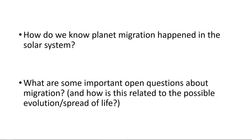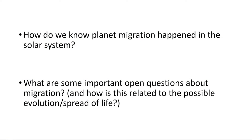I'm going to focus on two main questions here, because I don't have a ton of time. First, how do we actually know planet migration happened in our solar system? I think it's important to understand the context of that. And then, what are some of the most exciting open questions about this process, both in our solar system, and these same open questions will apply to other solar systems, especially how that relates to the evolution and the spread of life.